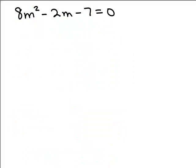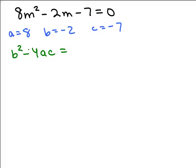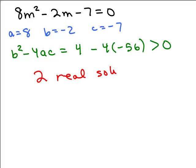Let's try one more. For this equation, a is 8, b is negative 2, c is negative 7 — you can pause the video and try it yourself. Let's compute b squared minus 4ac. B squared is negative 2 times negative 2, which is 4, minus 4 times 8 times negative 7. That's 4 times negative 56. So we have 4 minus negative 224, which is 4 plus 224 — it's greater than 0. That means you'd end up with plus the square root of some positive number and minus the square root of some positive number, giving two real solutions.